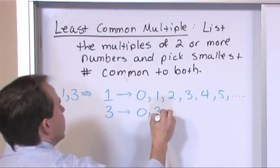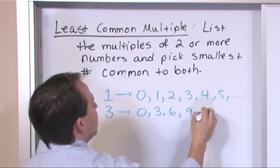The multiples of the number three are zero, three, six, nine, twelve, fifteen, dot dot dot.